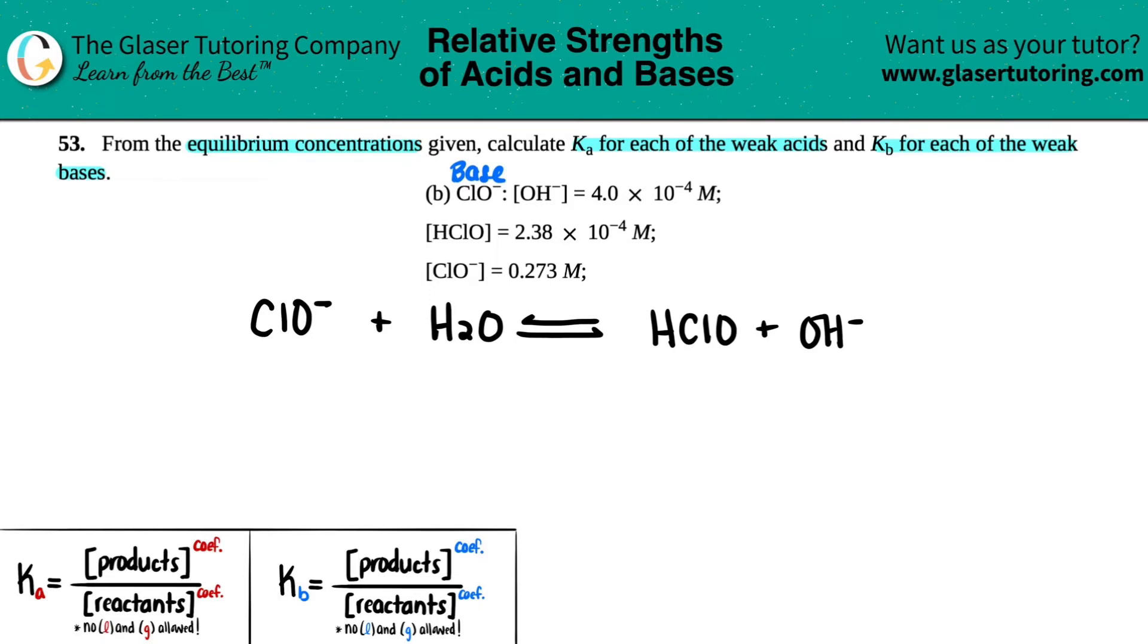Let's write down the numbers that they gave us. So these are all equilibrium concentrations, so that's cool. I have 4.0 times 10 to the negative fourth molarity here. I got 2.38 times 10 to the negative fourth molarity here. And on the ClO- side, I have 0.273 molarity.